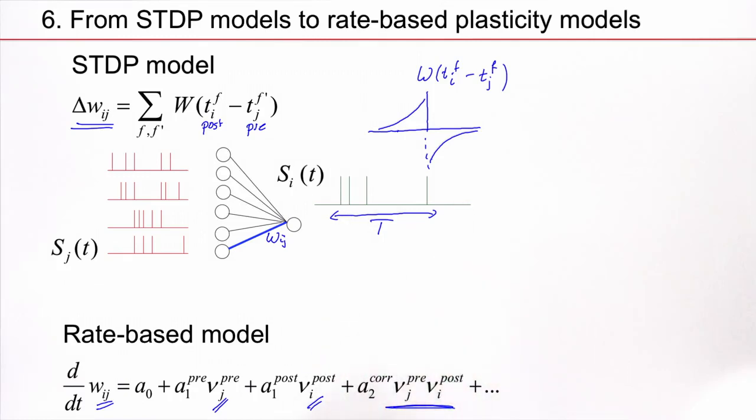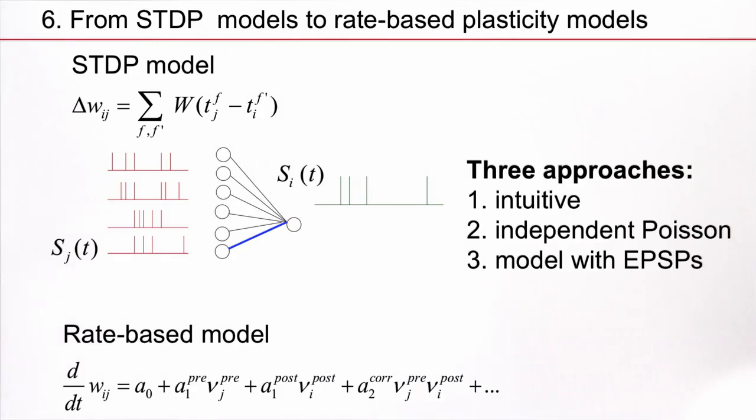And so in this case, I would have four spikes. So I would have four spikes in this window T. And that's a definition of the rate. So the rate, if you want, is a temporal average over spikes or an expectation to find a spike. So the question I would like to ask is whether I can relate the STDP model to a rate-based model. Is this possible?